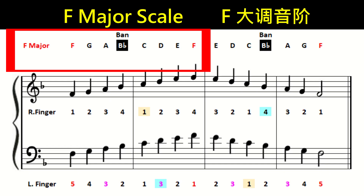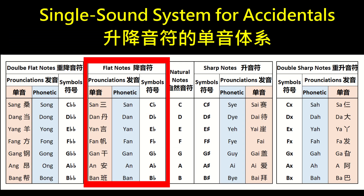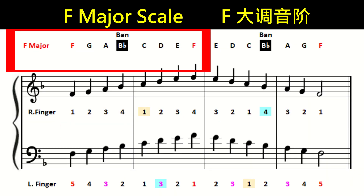The ascending F major scale is F, G, A, Bb, C, D, E, and F. There's one flat note: Bb. In Lesson 2 we learned that all flat notes rhyme with N, so Bb is called 'ban.' The single sound names of the F major scale are: F, G, A, ban, C, D, E, and F.